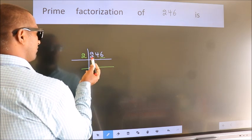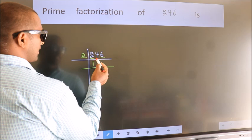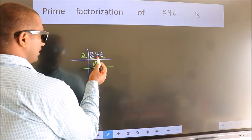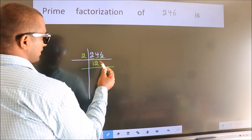First number 2. When do we get 2 in the 2 table? 2 times 1 is 2. The other number 4. When do we get 4 in the 2 table? 2 times 2 is 4. The other number 6. When do we get 6 in the 2 table? 2 times 3 is 6.